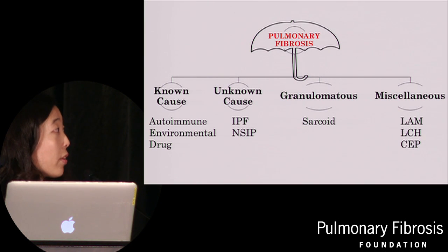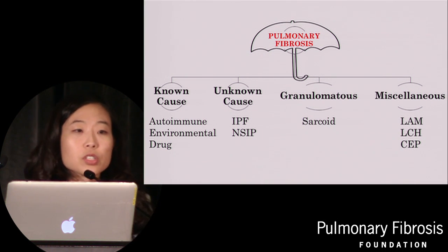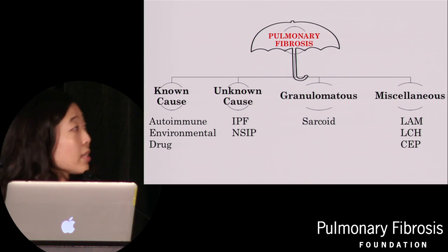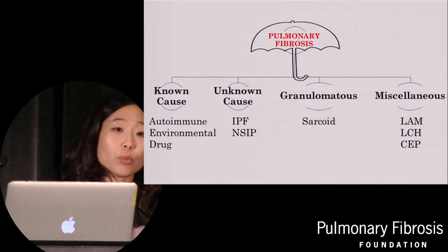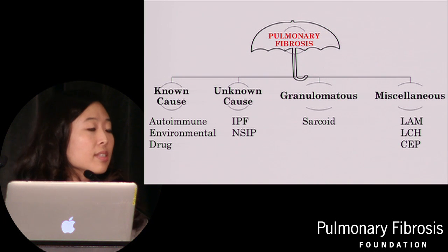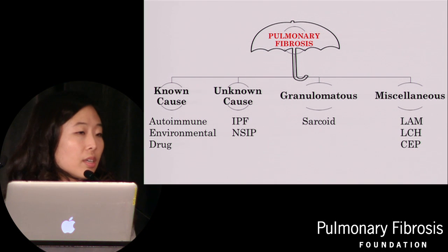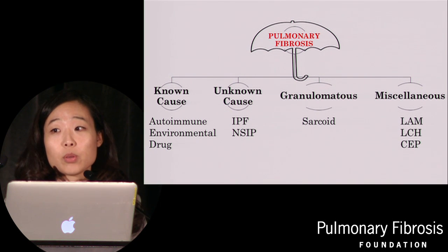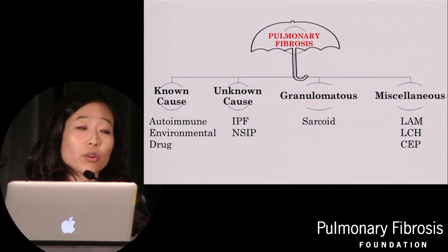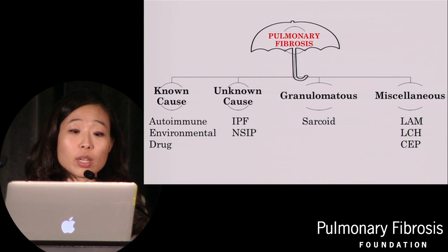If we look at pulmonary fibrosis as an umbrella term, different causes have been categorized. The first major category are those due to a known cause — things like autoimmune conditions such as scleroderma, rheumatoid arthritis, and myositis. We know that as part of these systemic disease processes, patients can develop pulmonary fibrosis. Environmental causes are also very important, such as exposures to birds, bird feathers, or molds, which leads to the disease called hypersensitivity pneumonitis.